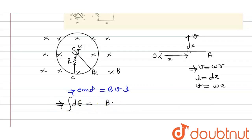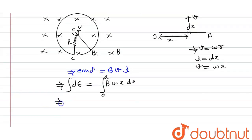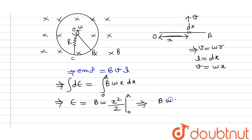We write the integral as B·ω·∫x dx from 0 to A, since the rod length is A (going from O to A). B and ω come outside the integral, leaving x²/2. Putting in the limits, we get EMF = Bω A²/2. This is the EMF generated across the rod OA.